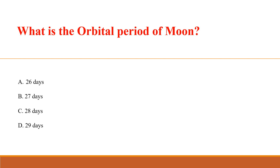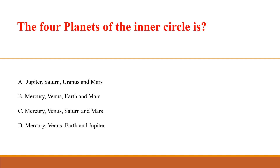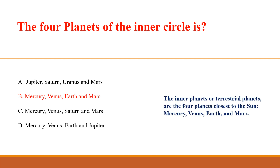What is the orbital period of the Moon? Answer B: 27 days. The four planets of the inner circle are: Answer B: Mercury, Venus, Earth, and Mars. The inner planets, or terrestrial planets, are the four planets closest to the Sun.